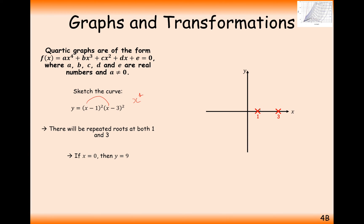Now remember it's going to be repeated roots at both of these 1 and 3 coordinates. It's x to the 4, so it's going to start in the top left, finish in the top right, and it's going to come down, go through 9 on the y-axis, touch at 1, come back down, touch at 3, and go back upwards again.